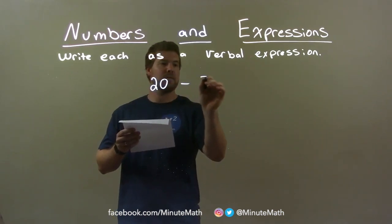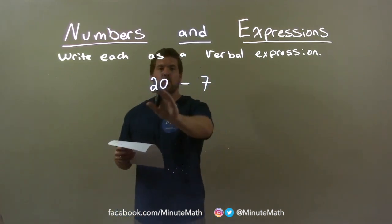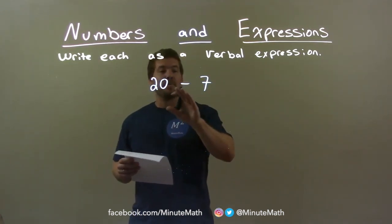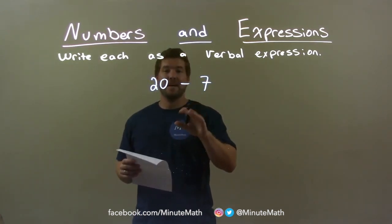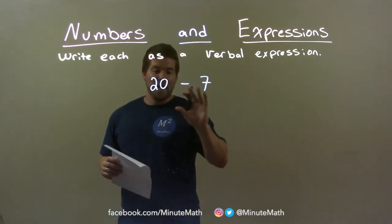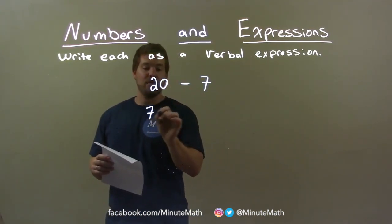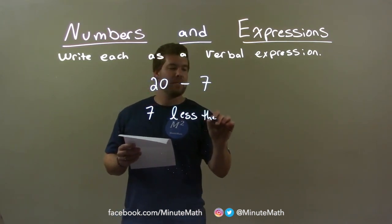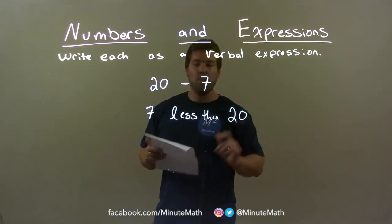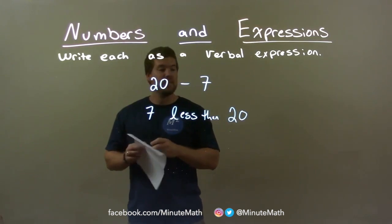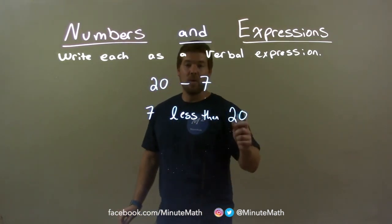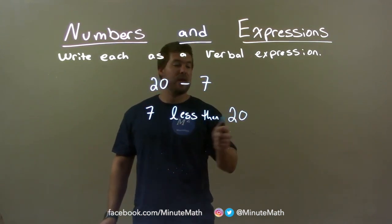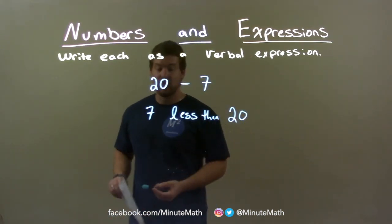20 minus 7. So we have 20 minus 7. A way we can write this when we subtract something is we can say 'less than.' So we actually can reverse this — we have 7 less than 20. And what that's really saying is 7 less than 20: we have that 20 and we're taking 7 from it. So 7 less than 20 is our final answer.